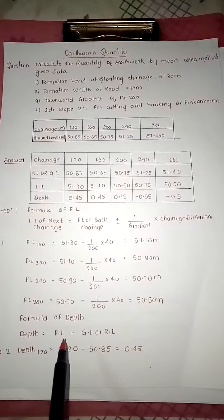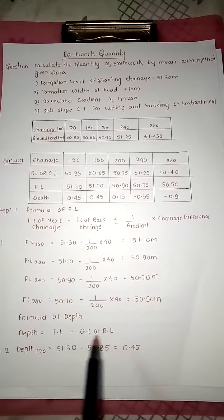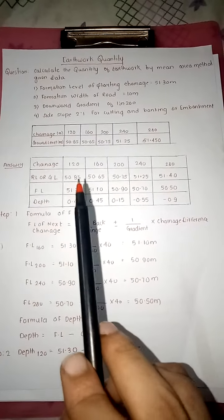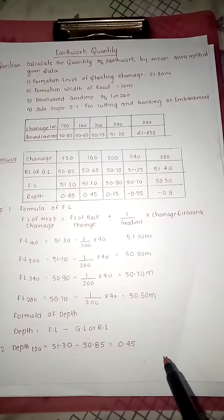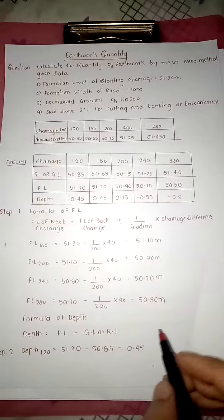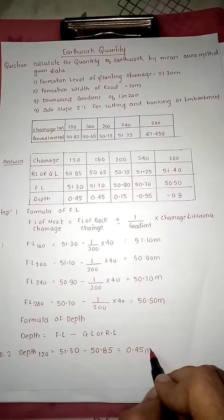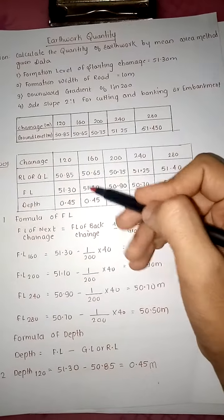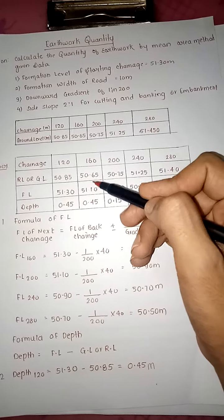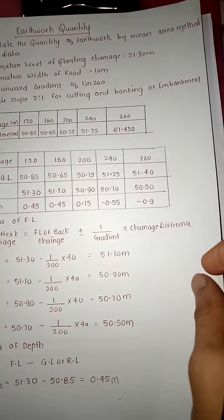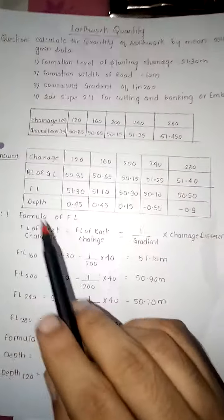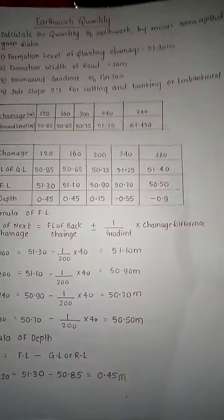Now depth formula: depth is equal to FL minus GL. Depth at 120: FL is 51.30 and GL is 50.85, so depth is 0.45 meter. Similarly calculate for others: 51.10 minus this gives 0.45. This way we calculate for all points.